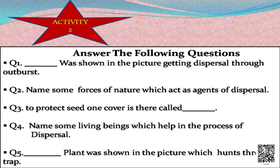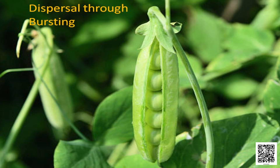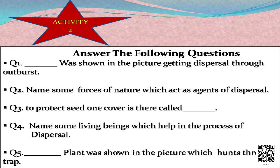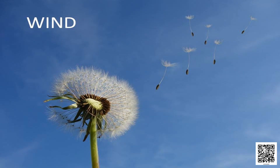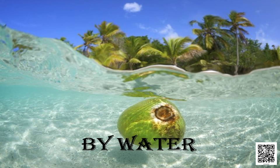Let me tell you the answers. The first one — which picture was shown where dispersal was done through outburst? Yes, it was a pea plant. The pea was shown in the picture getting dispersal through outburst, through the explosion. Now if we are talking about the forces of nature which act as agents of dispersal, we had two elements of nature: wind and water.